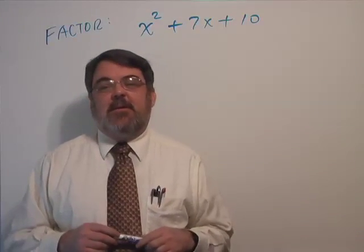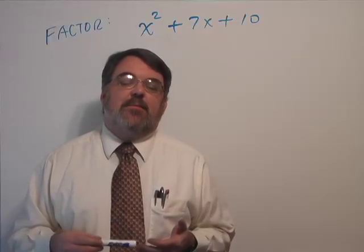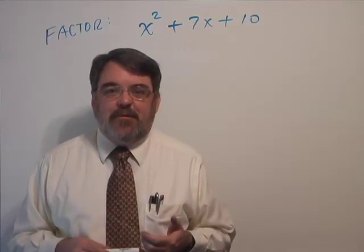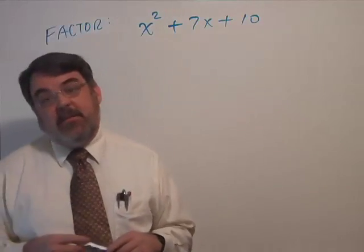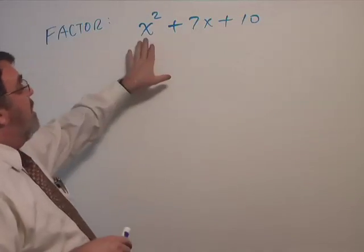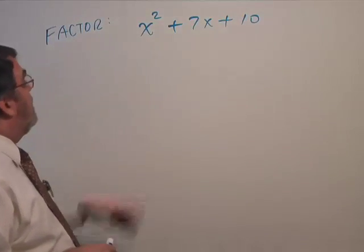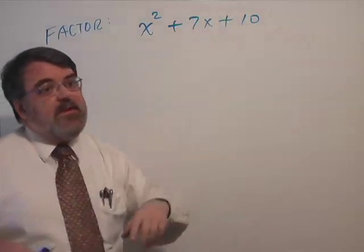In this topic, we're going to take on factoring trinomials, and these particular trinomials have a leading coefficient of 1. I'll explain what that means. By trinomial, it's a polynomial with three separate terms, and this one is x squared plus 7x plus 10.